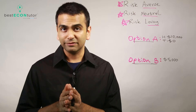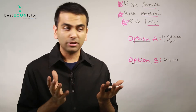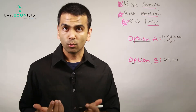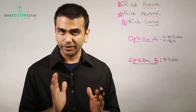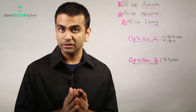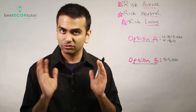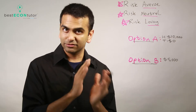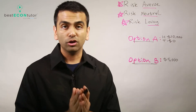Or another option they'll present to you is: how about we flip a fair coin? If you get heads, I'll give you $10,000. But if you get tails, I'll give you zero. Think about what you would do in that scenario — would you like option B where you get $5,000, or option A where you might get $10,000 or you might get zero?